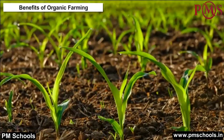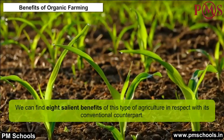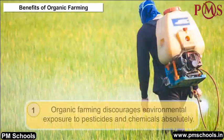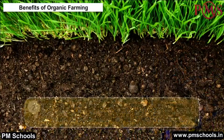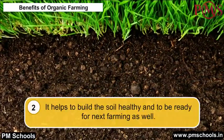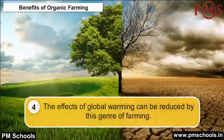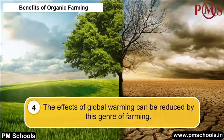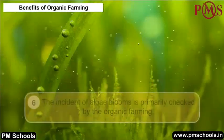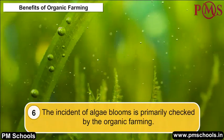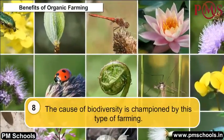Benefits of Organic Farming: As modern life sciences develop, we can identify 8 salient benefits of organic agriculture compared to its conventional counterpart: it discourages environmental exposure to pesticides and chemicals; it helps build healthy soil ready for the next farming cycle; it checks soil erosion; it reduces the effects of global warming; it supports water conservation and water health; it checks the incidence of algae blooms; it supports animal health; and it champions the cause of biodiversity.